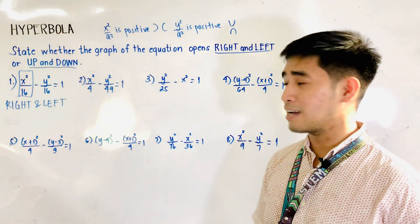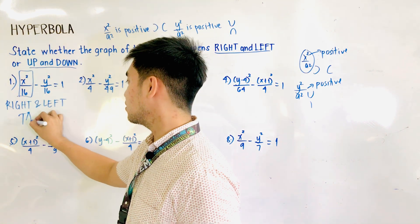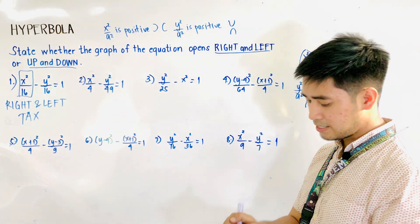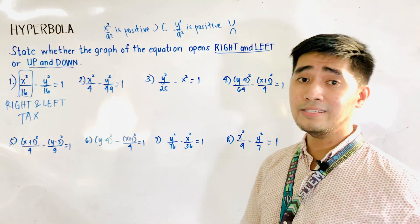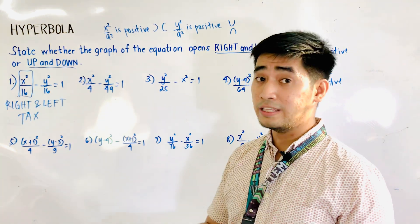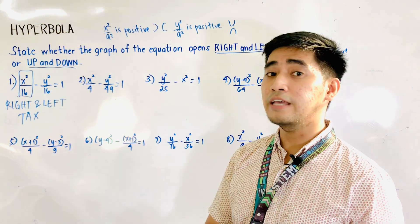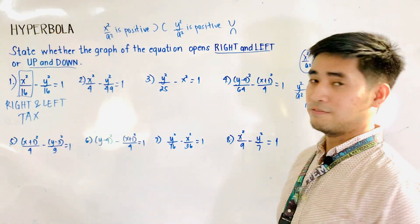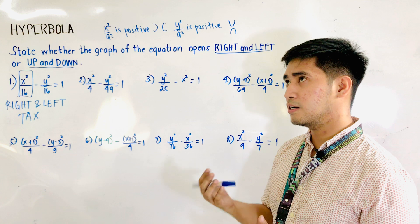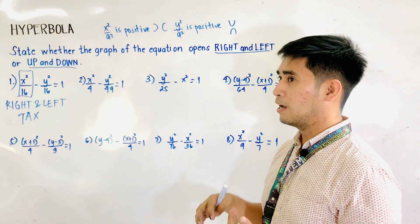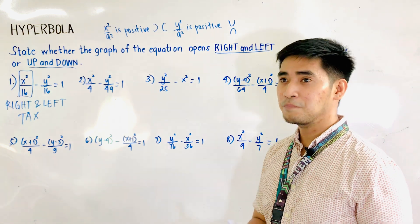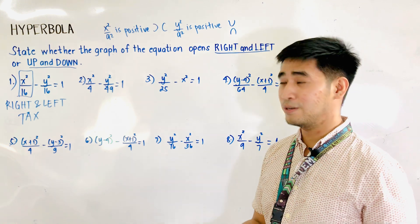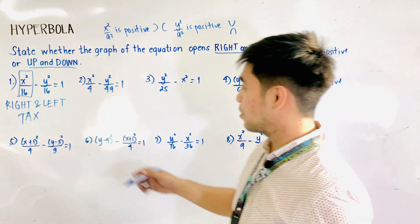If it is transverse axis x, remember, the hyperbola would open to the right and to the left. I always get confused whenever I start discussing hyperbola — I keep saying parabola instead. I'm sorry for that.